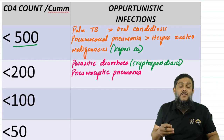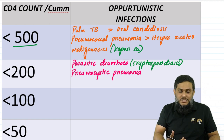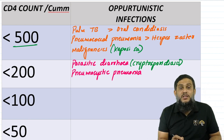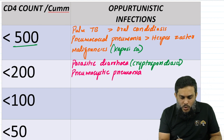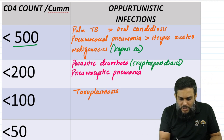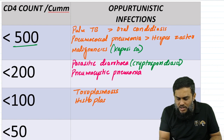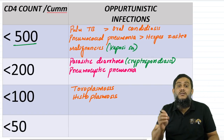If the CD4 count falls further to less than 100, the two very important infections we see are toxoplasmosis and histoplasmosis.